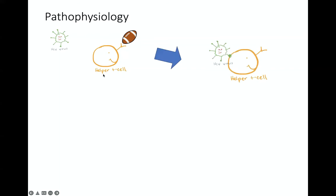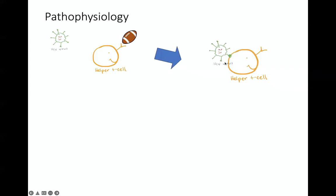The HIV virus attaches onto a CD4 cell, also known as a helper T cell, using the CD4 protein. By doing so, the HIV virus enters the helper T cell and starts to make that T cell an HIV-making factory. It actually takes over the control system of the T cells to start replicating the HIV virus.